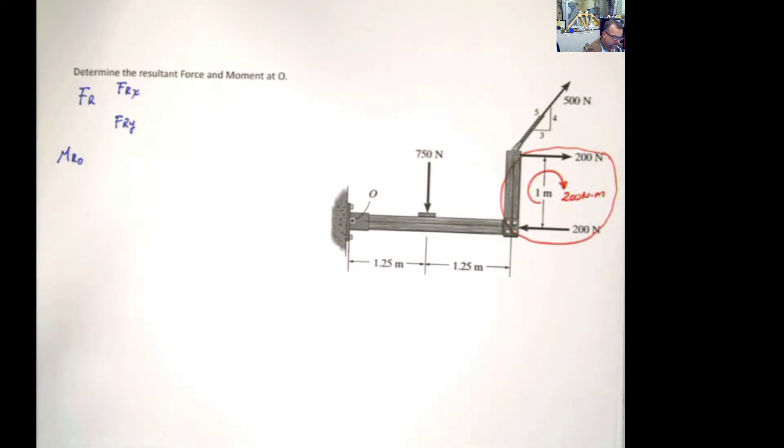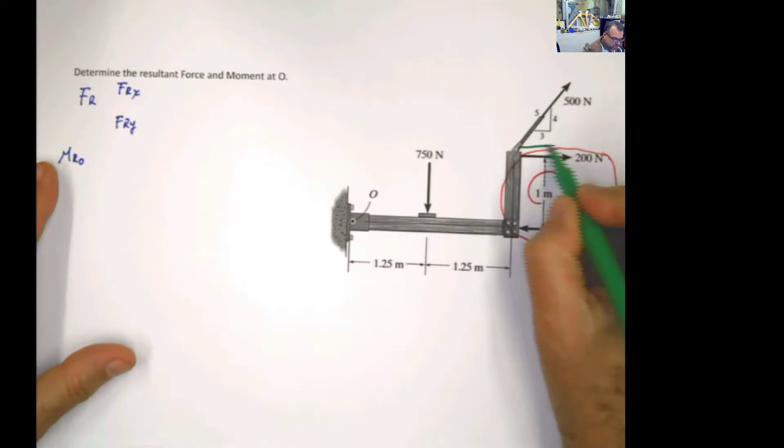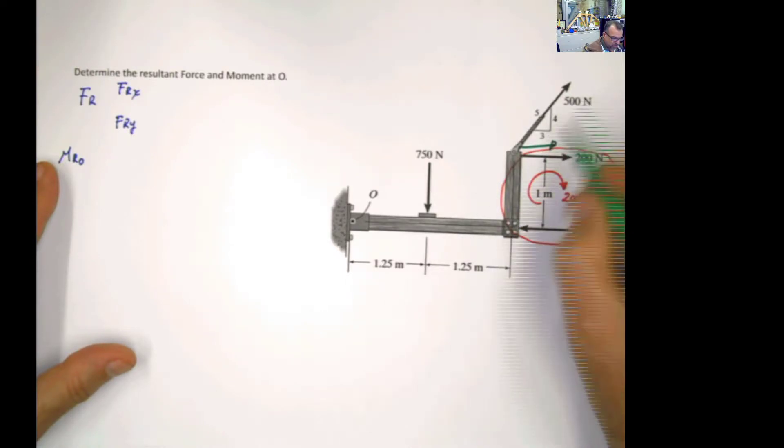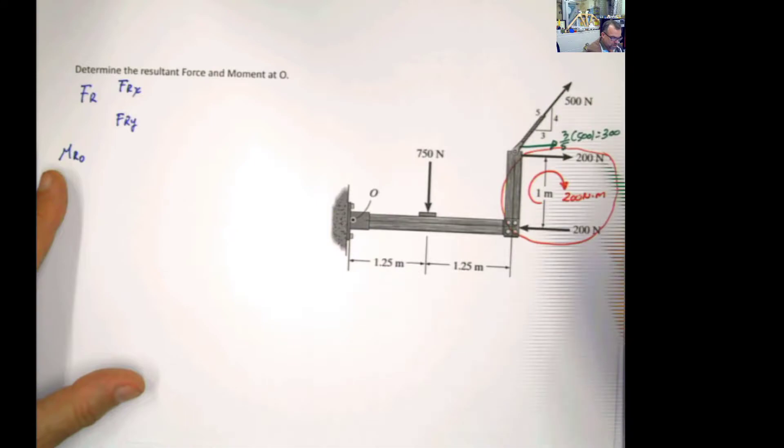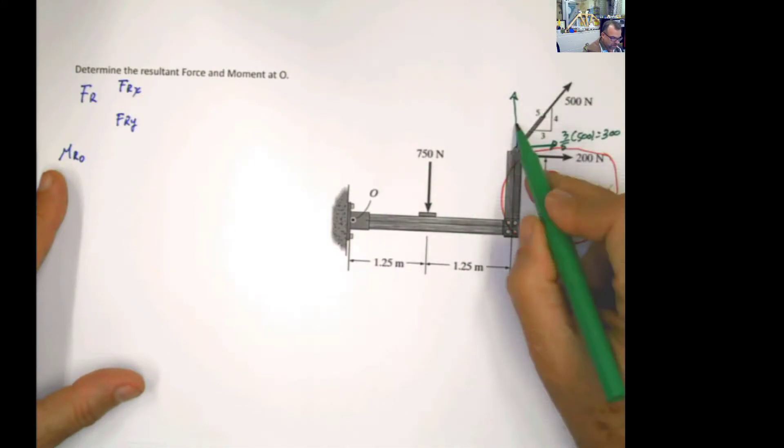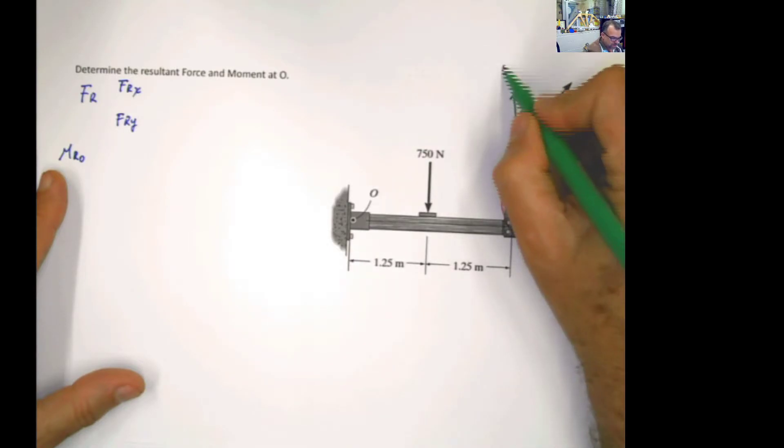Now, if we want to find the resultant forces in the x and y direction, then you have this component here. Let's decompose this into components. This component for this force, because you have this little triangle here, the problem is telling you use this ratio. You take the same side, 3, divided by 5 multiplied by 500. That would be this component, which is 300 newton. And if you look at these other components, then this component correspond to this side, 4 divided by 5 multiplied by 500, which is 400.